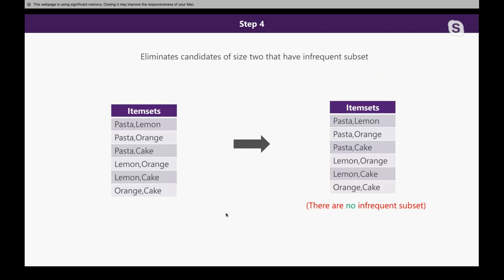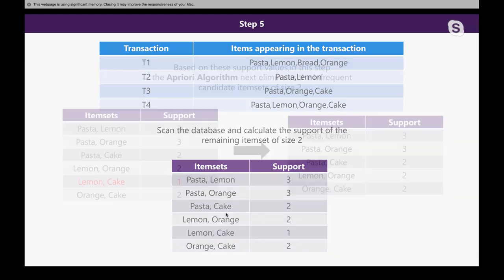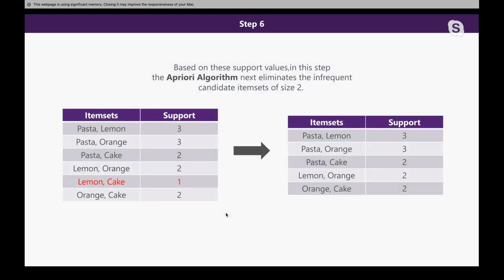In the next step, we need to find if there are any infrequent item sets. An infrequent item set is one that has an infrequent subset. There is no infrequent subset at this stage. Then in step five, we again calculate which item sets have a support value less than our minimum support. Here we see that lemon-cake has a support value less than our minimum support of two, so we need to cut down lemon-cake and create a new item set table.